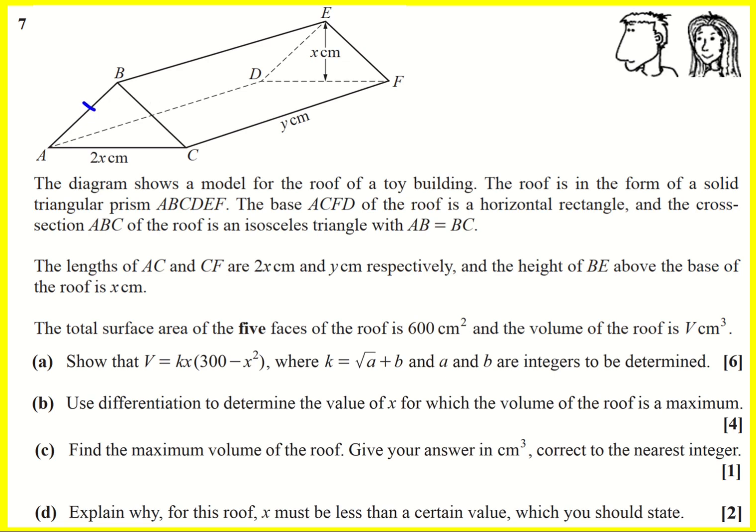And then we're told that AB equals BC. That's going to be useful. The lengths of AC and CF were given on the diagram as well as the height.